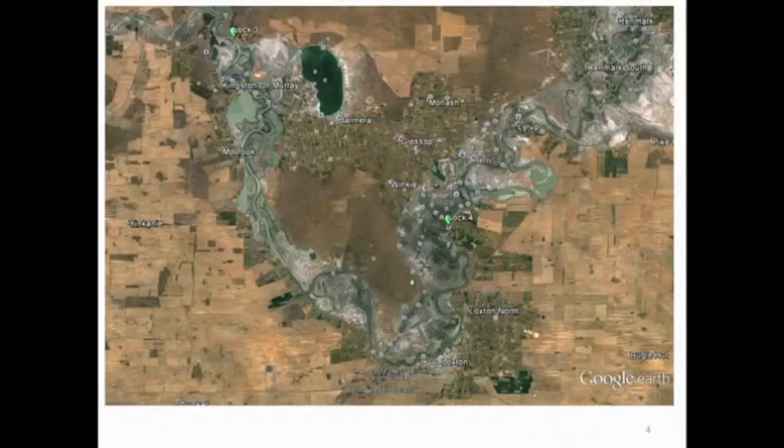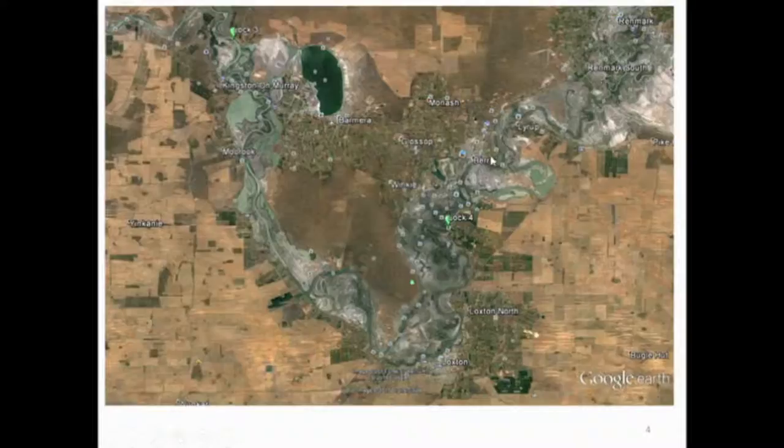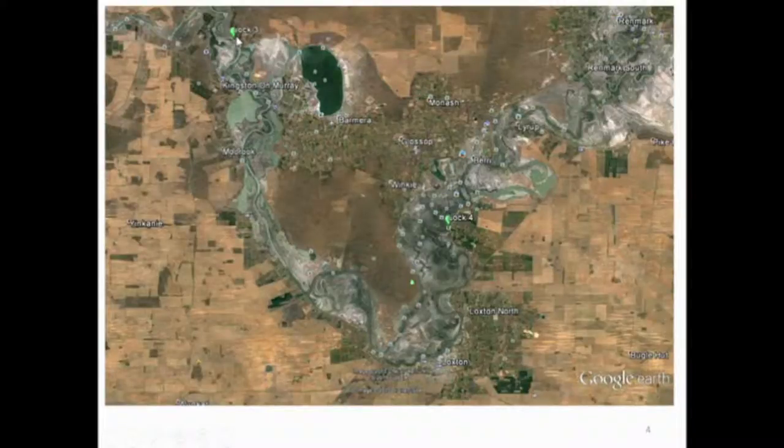There's a satellite image of this. Lock 4 is here. The upstream end with the border is over to the right. It flows this direction down to Lock 3, which is the bottom end of the model.